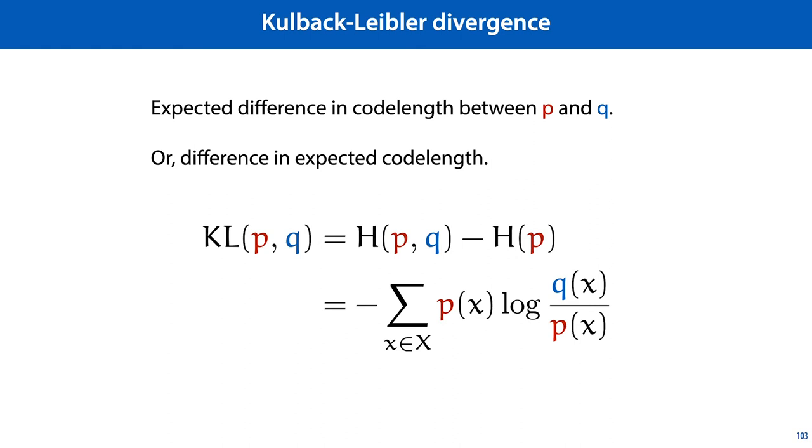The cross-entropy is a nice measure, but it's not 0 when p and q are equal. Instead, it's equal to the entropy of p. To get a measure that is 0 when the two are equal, we can just compute the cross-entropy and subtract the entropy of p. This is called the Kullback-Leibler divergence. The KL divergence is 0 when both of its arguments are equal, essentially when our model q is perfect. And we will see both the cross-entropy and the KL divergence again later in the course.